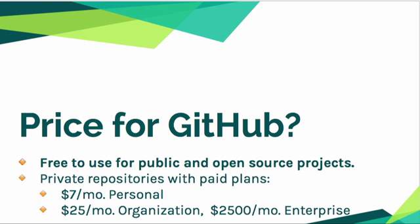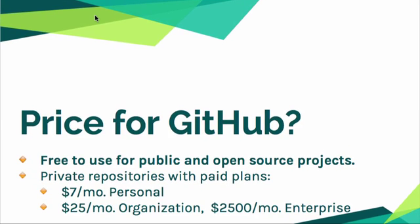GitHub is free for public and open source projects. If you have something you want to open source, you can get a GitHub repository for free — just sign up for a free account and you're good to go. If you want private repositories, you're going to have to pay for those. It's $7 per month for personal, as of April 20th, 2016.